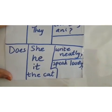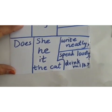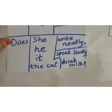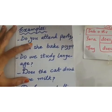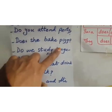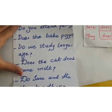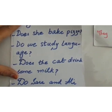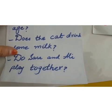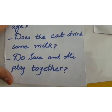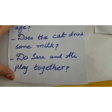Now for the helping verb 'does' — used with singular subjects: Does she write neatly? Does he speak loudly? Does the cat drink milk? You can see a number of examples: Do you attend a party? — with 'you' we use 'do'. Does she bake pizza? — with 'she' we use 'does' because she is a singular subject. Do we study language? Does the cat drink some milk? Do Sara and Ali play together? — here 'do' is used because Sara and Ali are two names, making it a plural subject.